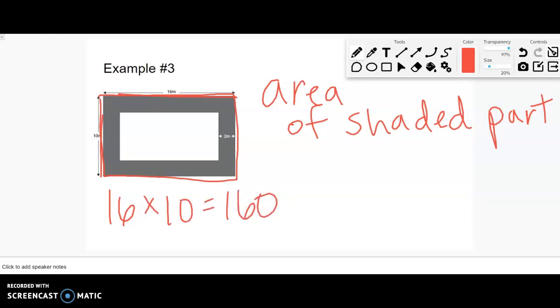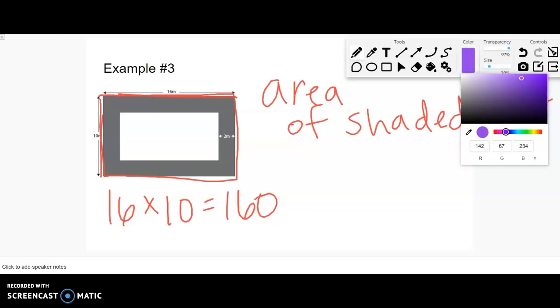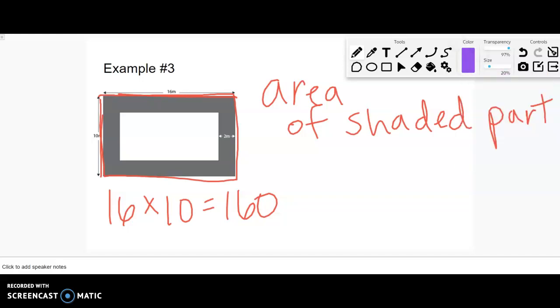Can we figure out this small white rectangle? They didn't give us dimensions, but let's see. I know that this whole thing is 16. I know that this part here is 2. I can assume it's the same all the way around, so this over here is 2. If I have 16 and I take away 2 and take away 2, 16 minus 2 minus 2 is going to be 12. So I know it's 12 meters wide.